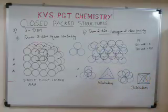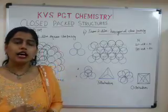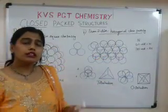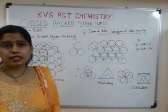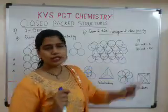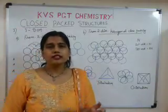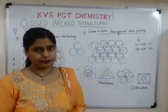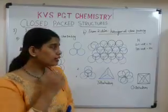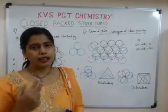Now, the important point to note: suppose there is a close-packed structure and the crystal lattice has a total of N atoms. The number of octahedral voids is equal to N — octahedral voids remain the same as the number of atoms present in the lattice structure. The tetrahedral voids are twice the number of atoms: tetrahedral voids are always double the octahedral voids, so tetrahedral voids = 2N.